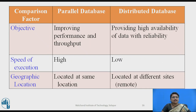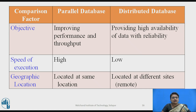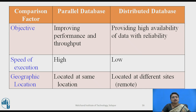The objective of a parallel database is to improve performance and throughput, whereas the objective of a distributed database is to provide high availability with reliability. Regarding execution speed, since a parallel database is tightly coupled and connected through high-speed LAN, execution speed is high. In a distributed database, it is low because it is connected through the internet, and performance depends on internet speed. Regarding geographic location, a parallel database is located at the same site, while a distributed database is spread across different sites.